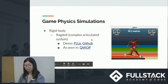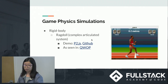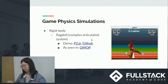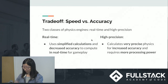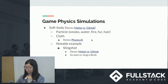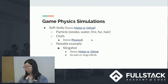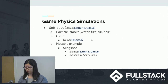Ragdoll physics is often used when a character dies, so it gives more realistic movement. Physics-based character animation in the past only used rigid body dynamics due to speed and ease of calculation, but modern games and movies are increasingly using soft body physics for its realism.